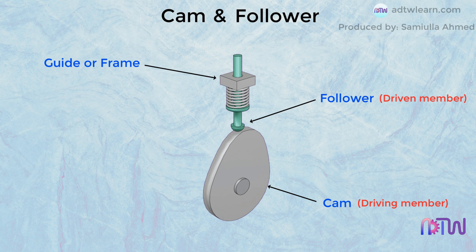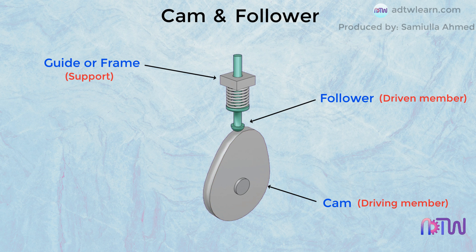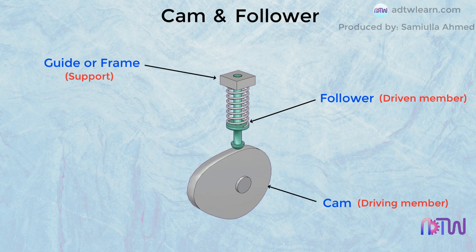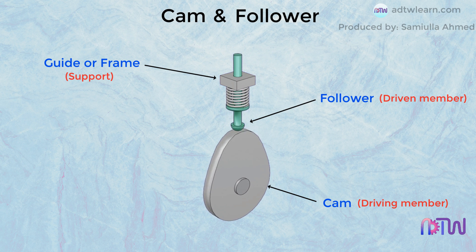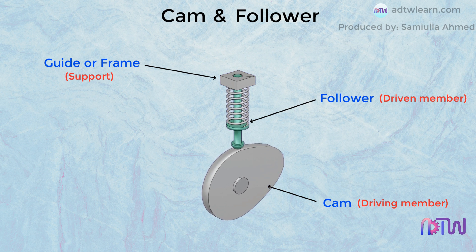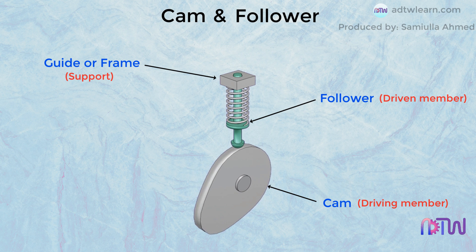The frame is the support that acts as a guide for the follower. The profile of the cam is designed to achieve the desired motion, and the follower is placed on the cam, which is held in the frame. As the cam rotates, its varying cross section makes the follower reciprocate. This is how the cam and follower mechanism works.